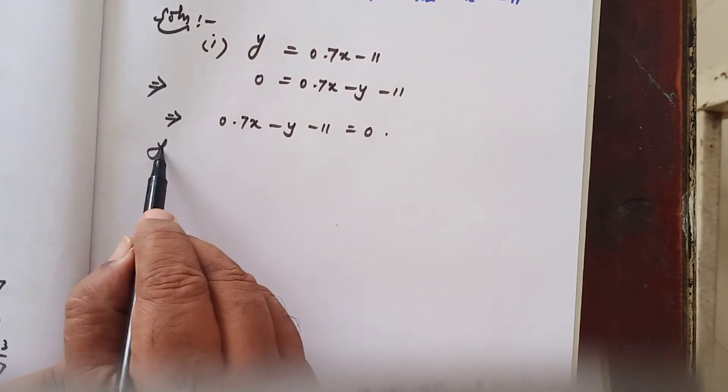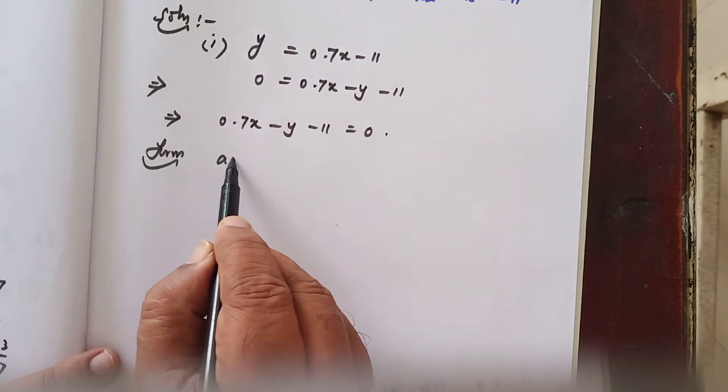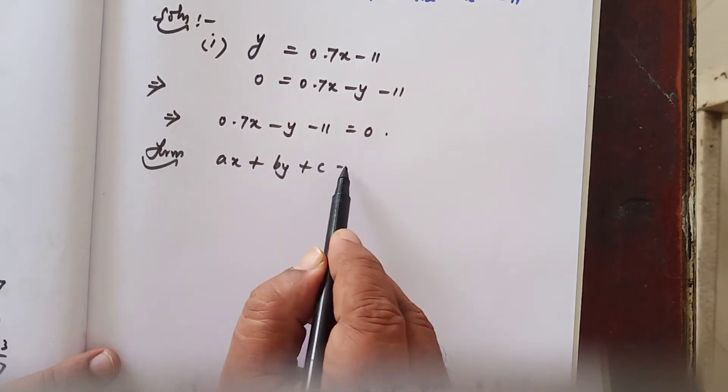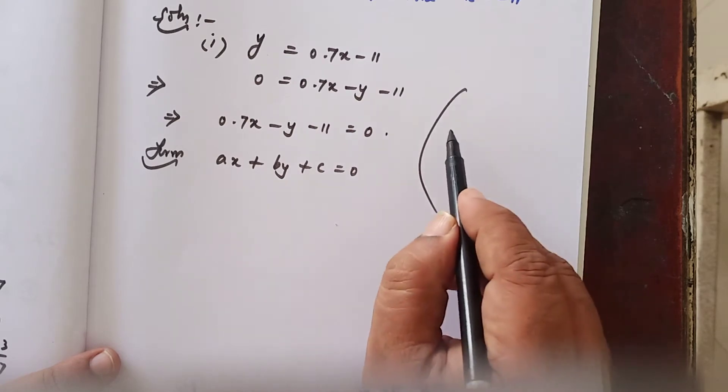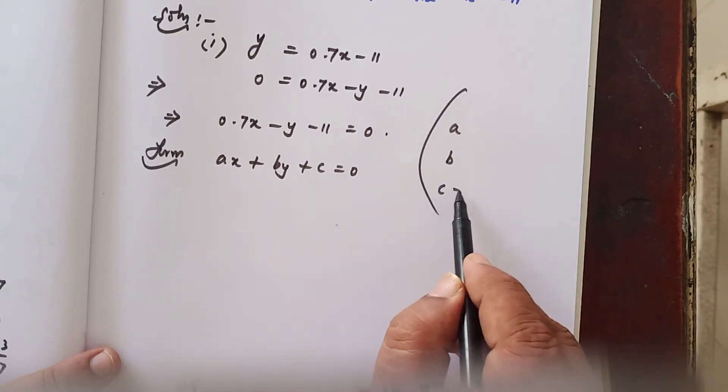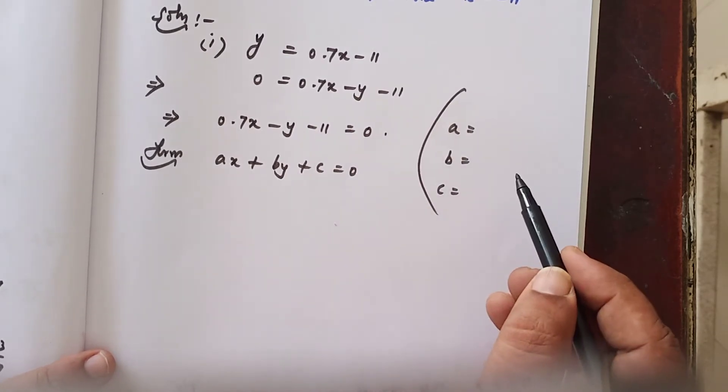So, what form it is? Form Ax plus By plus C equals 0. Write the values of A, B and C.